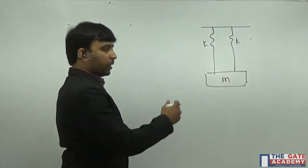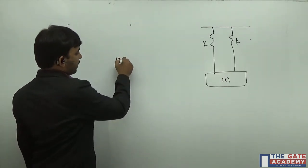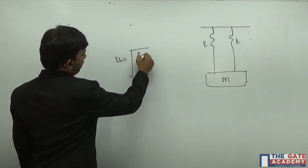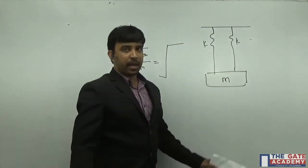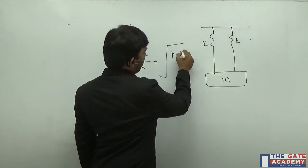Here these two springs are connected in parallel, so the natural frequency is nothing but root of k equivalent by m. Since the two springs are connected in parallel, k equivalent for parallel connection is...